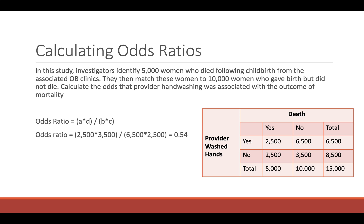Let's calculate the odds ratio with this example. Investigators identified 5,000 women who died following childbirth from associated OB clinics, then matched these to 10,000 women who gave birth but did not die. We're calculating the odds that provider hand washing was associated with the outcome of mortality. Taking the values from the table and plugging them into the odds ratio equation, we get an odds ratio of 0.54.